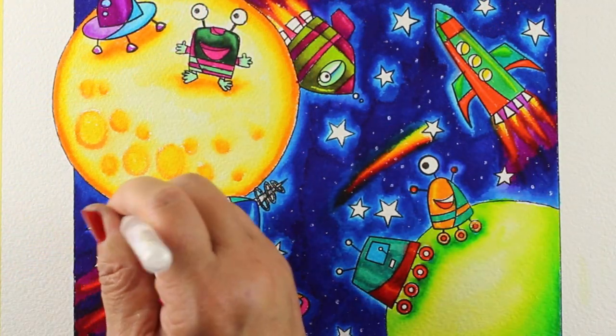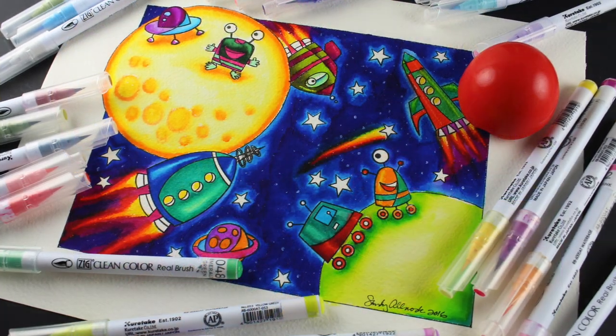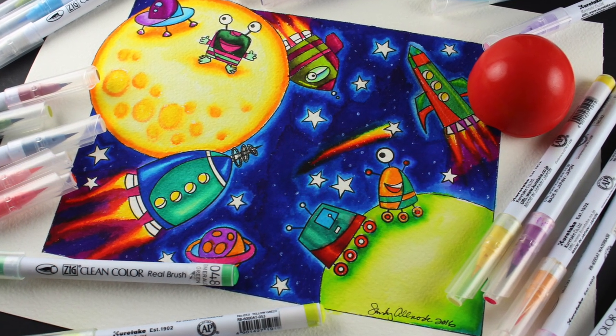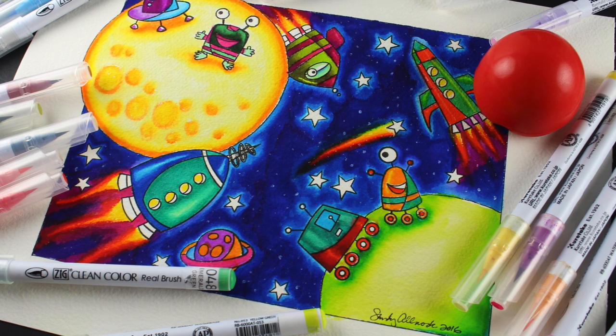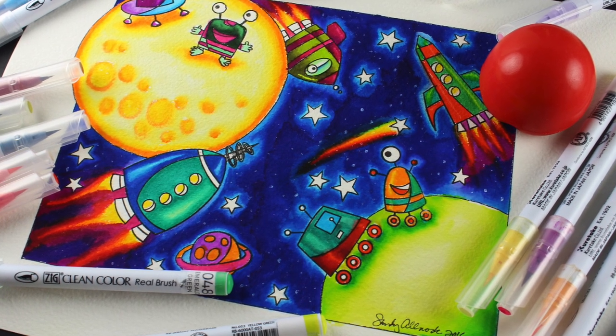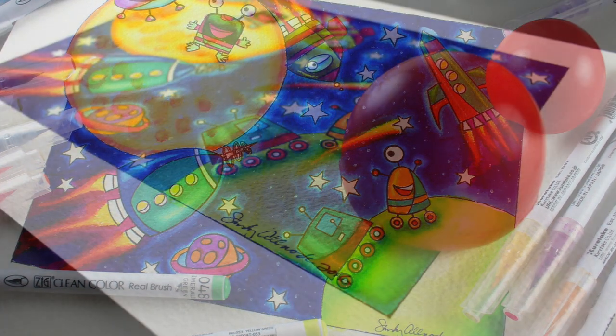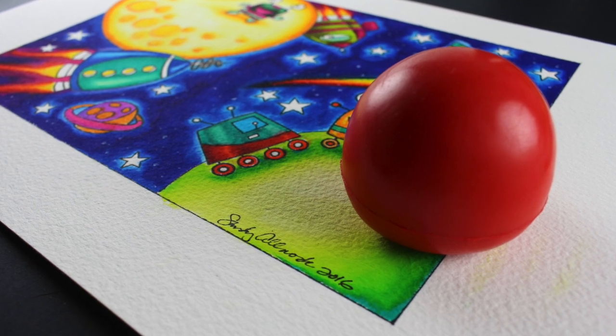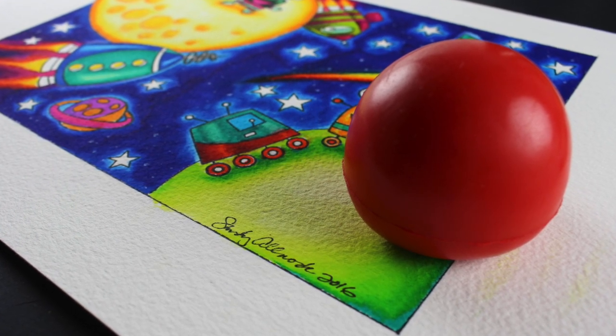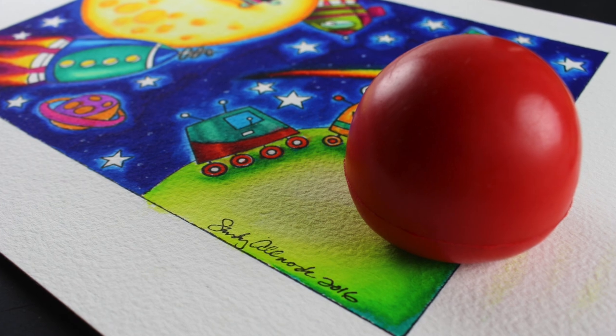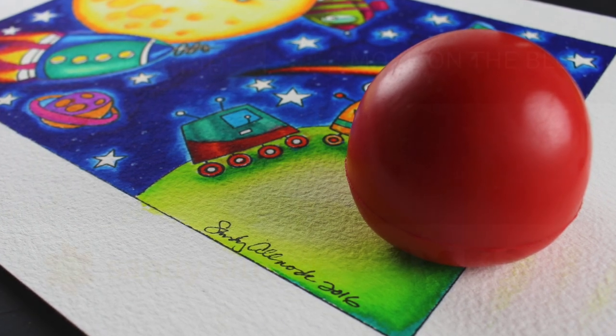After adding white gel pen details in the sky, this is all finished and ready for auction. If you'd like to enter the bidding to win this particular piece, you're welcome to go over to my blog. There's a widget there where you can enter your bid. All your monies will go to charity. And shipping is free for the winner of the auction.